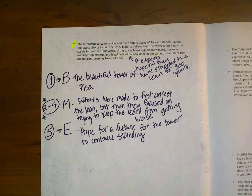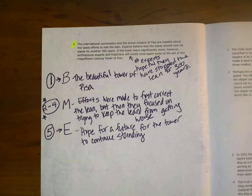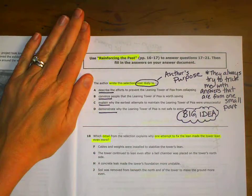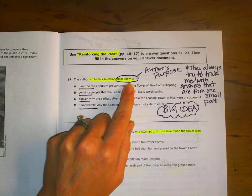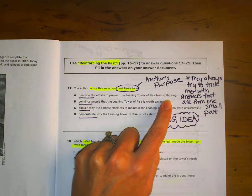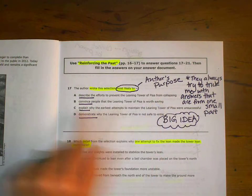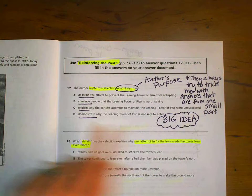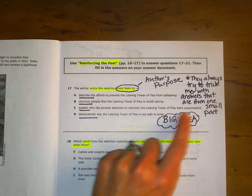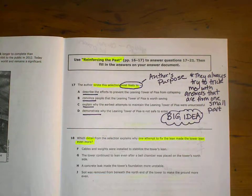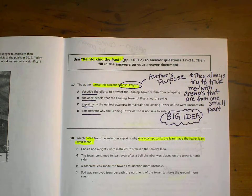And now I'm ready to go answer the rest of my questions. Pause the video until you're ready to go to the questions. So, here we go. The author wrote this selection most likely to. So what was the reason that the author most likely wrote this? Describe the efforts to prevent the leaning tower of Pisa from collapsing. That was a pretty good part. Convince people that the leaning tower of Pisa is worth saving. I'm not sure of any language that was trying to convince me of anything. Explain why the earliest attempts to maintain the leaning tower of Pisa were unsuccessful. I know that that was only a small part. Demonstrate why the leaning tower of Pisa is not safe to enter. Only a small part. I need to find the one that is the big picture. The big idea here. So, go ahead and choose your answer.